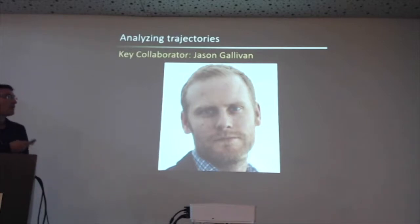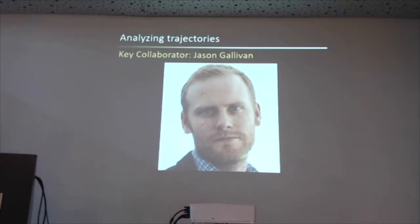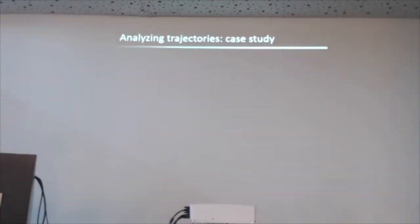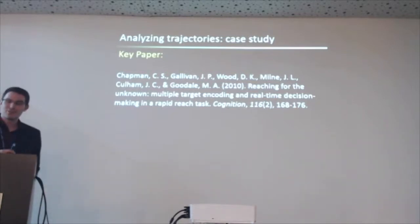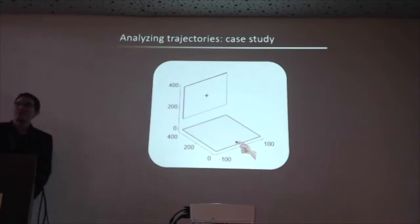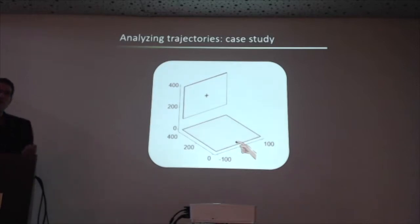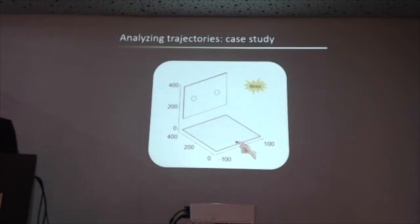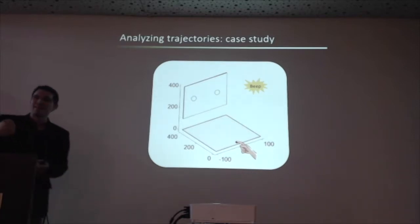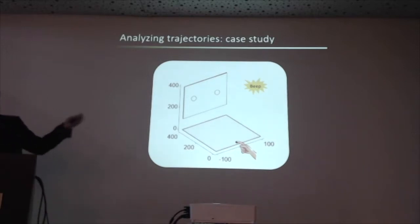A lot of this started when Jason Gallivan and I were grad students at Western with Mel and Jody, so a lot of this early work — especially Jay — was a big part of. So what's the case study I want to present to you guys today? It's explained in this paper — I'm mostly going to be flashing these slides up so that you guys can check them out later. This paper was specifically designed because we read Paul's work on the affordance competition hypothesis and got super excited and said how could we possibly see this behavior in humans — by that behavior I mean the case where you present people with multiple targets, as Paul had shown to his monkeys.